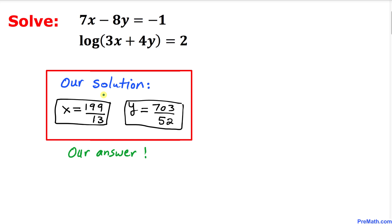Thus, our solution set is x equals 199 divided by 13 and y equals 703 divided by 52. Thanks for watching, and please don't forget to subscribe to my channel for more exciting videos.